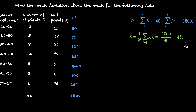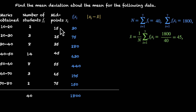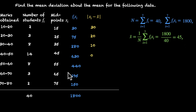Now that we have the mean, we can compute the deviations. We find |x_i − x̄| for each midpoint: |15−45| = 30, |25−45| = 20, |35−45| = 10, |45−45| = 0, |55−45| = 10, |65−45| = 20, |75−45| = 30. So the absolute deviations are 30, 20, 10, 0, 10, 20, 30.